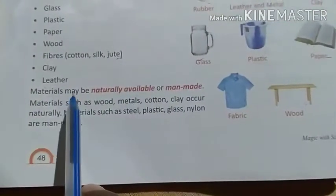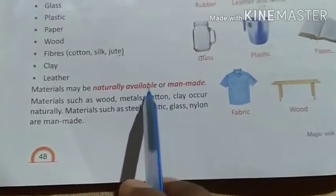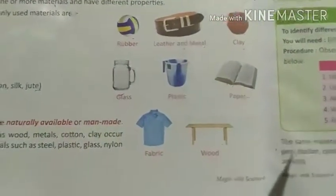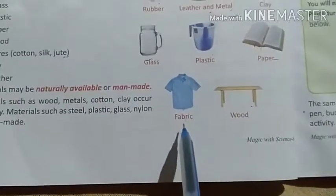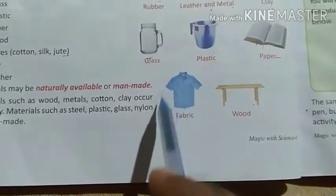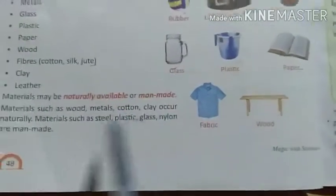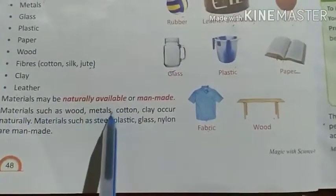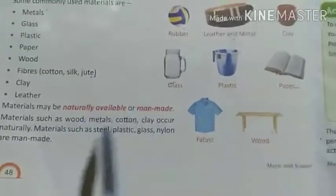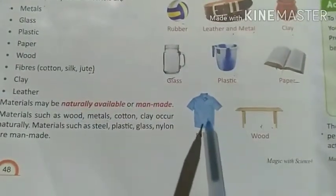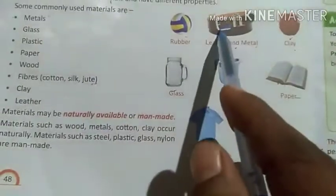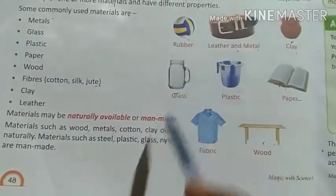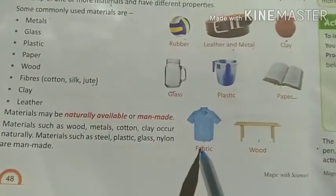Materials may be naturally available or man-made — jo materials hote hain, vo naturally ho sakte hain ya man-made hote hain. For example, fabrics mein jaise rayon hai — yeh man-made fiber ka cloth hota hai. Materials such as wood, metal, cotton, clay occur naturally. But steel, plastic, glass, and nylon ki cloths are man-made.